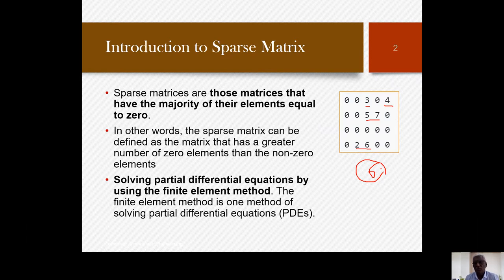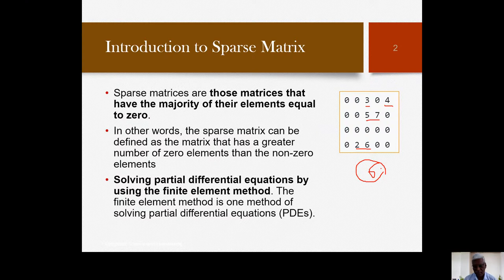If we store this matrix as-is, we need 5 by 4 — that is 20 locations. If each integer takes 2 bytes, that is 40 bytes required. It is not necessary to store all elements in the array or linked list because we are only interested in the non-zero elements. So how do we store only the non-zero elements in the multi-linked structure and how do we access them?